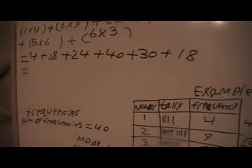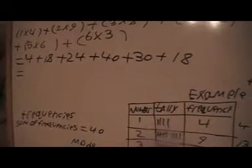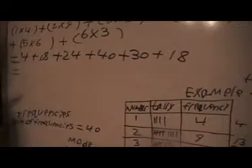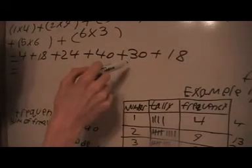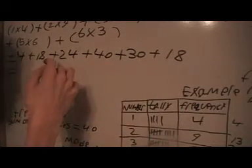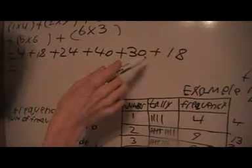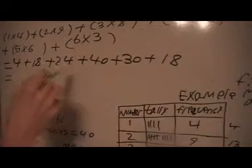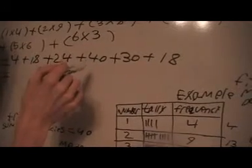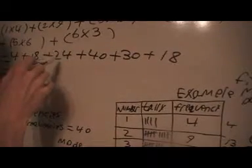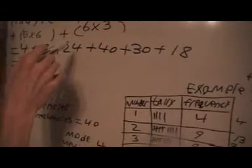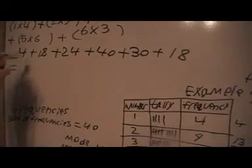Then when we do the multiplications, we're going to get 4 plus 18 plus 24 plus 40 plus 30 plus 18. And that's going to be the sum that we'll get here. And then let's add these up and see what we get. We're going to get, let's say I've got a 40 and a 30 here. So that's going to give us a 70. And I've got two 18s. That's going to be 36. Plus my 70, that's going to give us a 106. And then I'm going to add my 24, that's going to give us 106, 130. And I'm going to get 134.